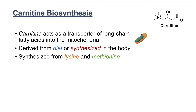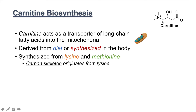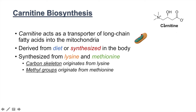Looking at the chemical structure of carnitine, the carbon skeleton actually originates from lysine, and the methyl groups attached to the nitrogen — these three methyl groups — are from methionine through methyl transferase reactions utilizing the cofactor S-adenosyl methionine.